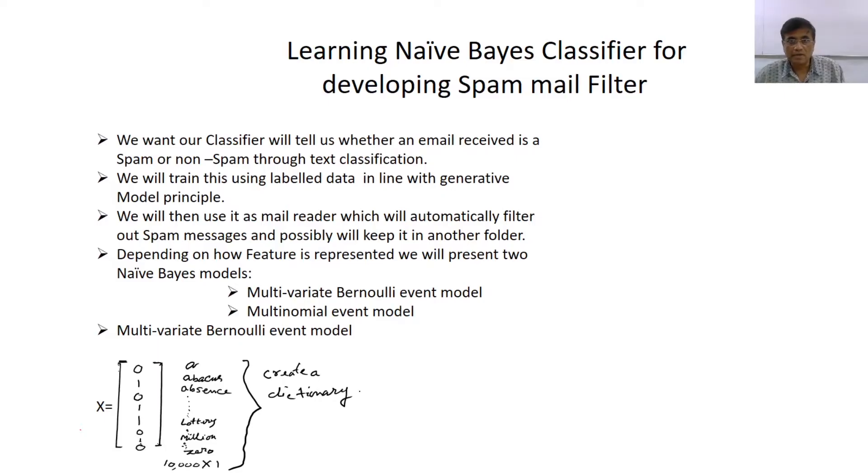And then we switched to other kinds of classification models, for example Gaussian discriminant analysis where the features were assumed to be random continuous variables which follow normal distribution. However, in many practical situations that may not be the case, just like this spam filter design where the features could be discrete in nature. And in that case we cannot use the Gaussian discriminant analysis based model. So those are the cases where we can use Naive Bayes classifier.